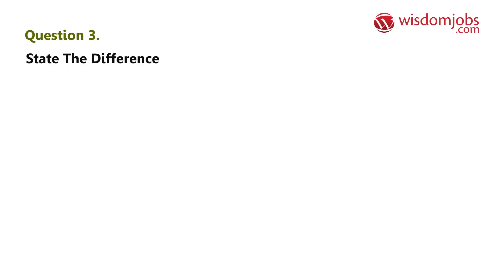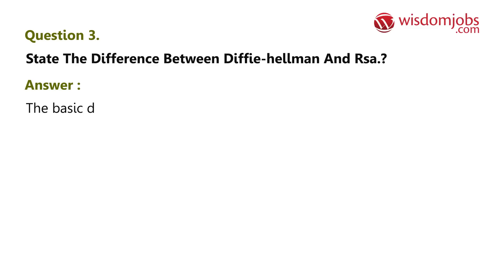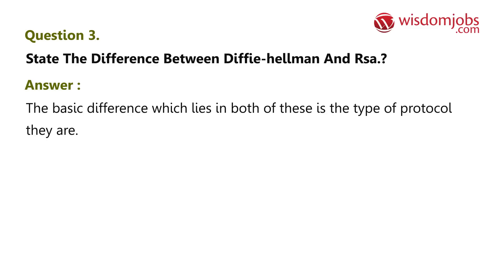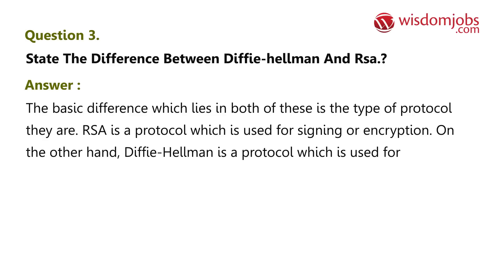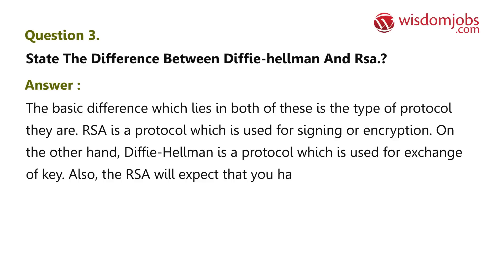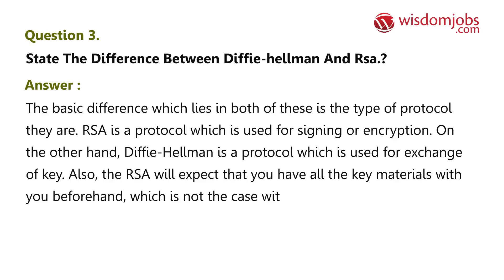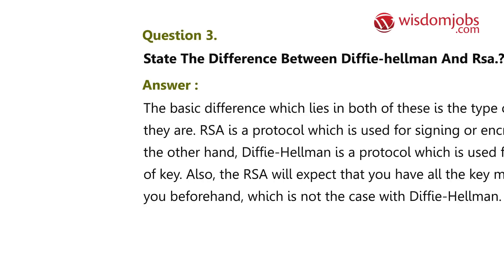Question three: state the difference between Diffie-Hellman and RSA. Answer: the basic difference lies in the type of protocol they are. RSA is a protocol used for signing or encryption. On the other hand, Diffie-Hellman is a protocol used for exchange of keys. Also, RSA will expect that you have all the key materials with you beforehand, which is not the case with Diffie-Hellman.